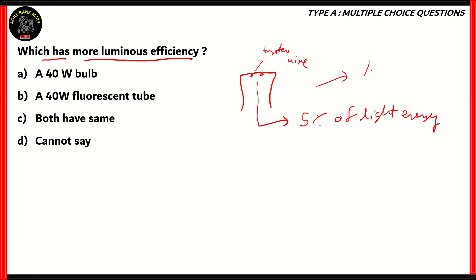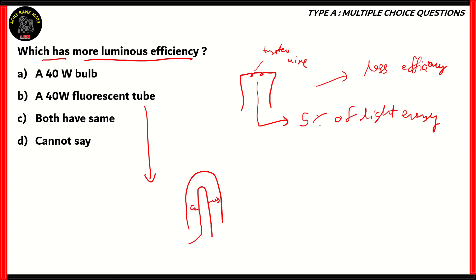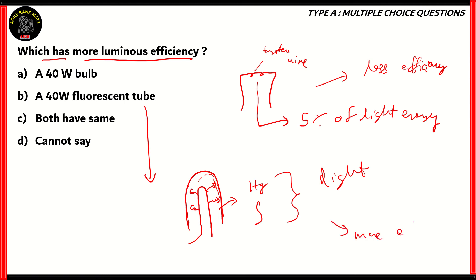A bulb definitely has less efficiency compared to others like LEDs. In a fluorescent tube, UV rays are discharged from a central point and hit the exterior of the tube, which is coated with different materials such as mercury compounds. These produce light, and this method is actually more efficient than the bulb — we get about 25 to 30% light efficiency instead of 5%. Therefore, option B, a 40-watt fluorescent tube, has more luminous efficiency than a 40-watt bulb.